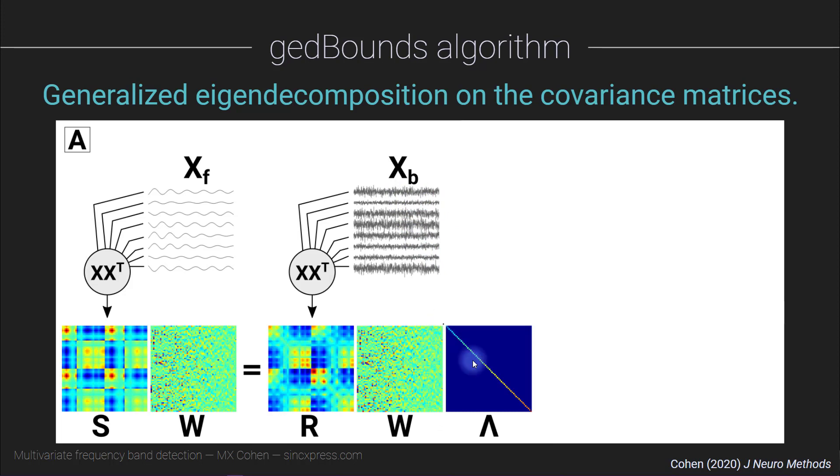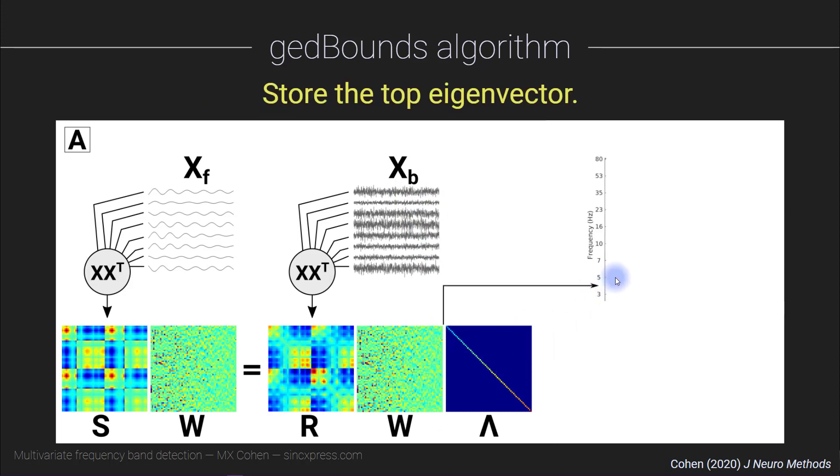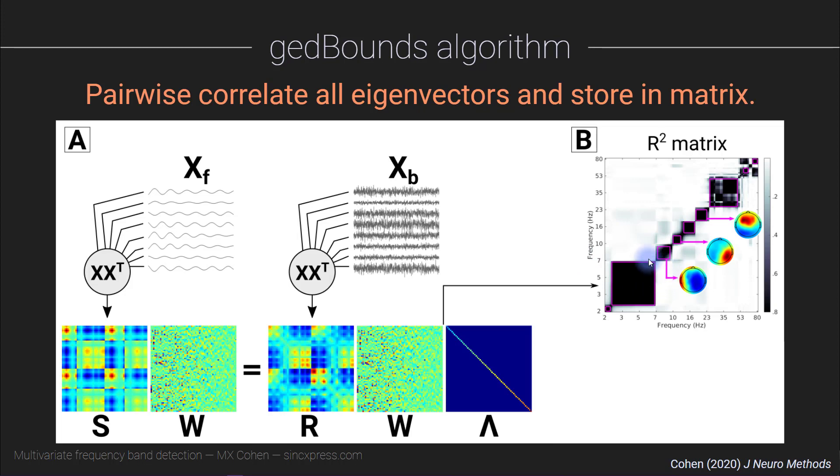So we take that eigenvector associated with the largest eigenvalue, and we store that for one frequency, for example, 4 Hz. And then we repeat this procedure, where this covariance matrix is the same for all these frequencies, and this narrowband-filtered covariance matrix is different, and you can select whichever frequency ranges you like. In this case, I went from 2 Hz up to 80 Hz. Once you get this collection of eigenvectors over all of these different frequencies, you correlate them. So this is a matrix of all of the correlations between the eigenvectors at different frequencies. Just to be clear, you repeat this for many frequencies, then this pixel here, the color value at this pixel, is the correlation between the eigenvector at 20 Hz and the eigenvector at 6.8 Hz.